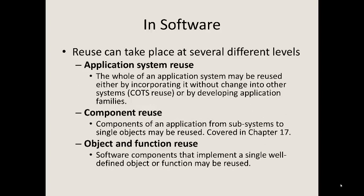You can have reuse that takes place at several different levels. Application system reuse, which involves the whole application systems, can be reused either by incorporating it without changes into other systems — that's a component off the shelf — or by developing application families. You can do component reuse, where individual components of an application from a subsystem to individual single objects can be reused, covered in Chapter 17. And then object and function reuse, using individual objects or functions from other code.